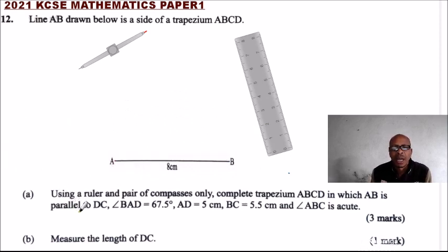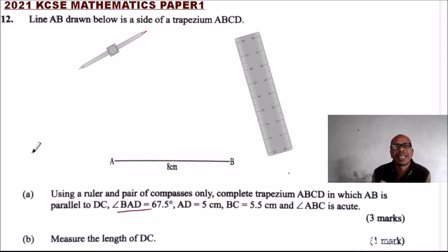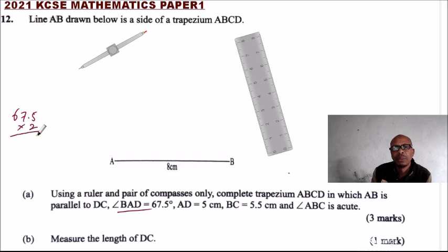Let's look at this angle — 67.5 degrees. How do you construct an angle of 67.5 degrees? If you multiply 67.5 by 2, you get 135 degrees.